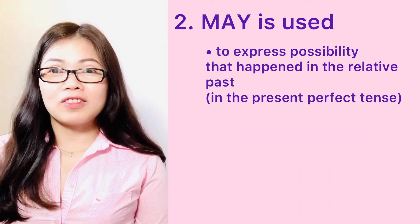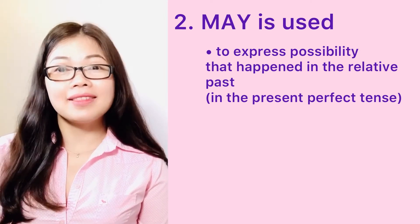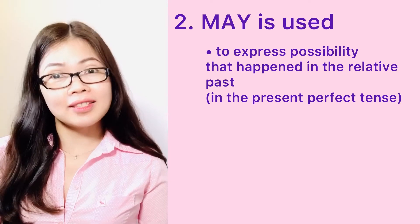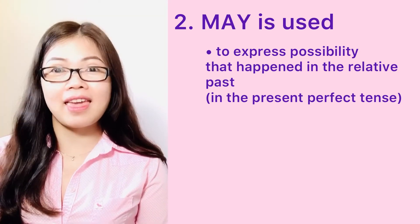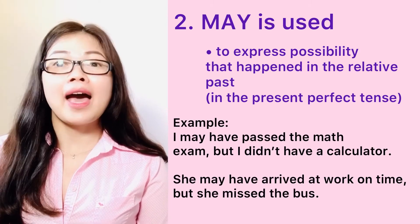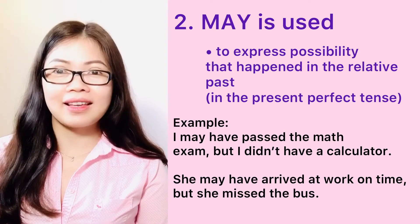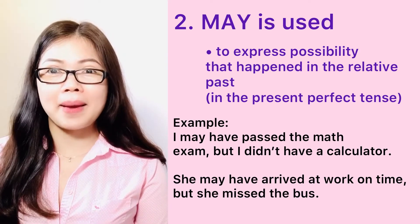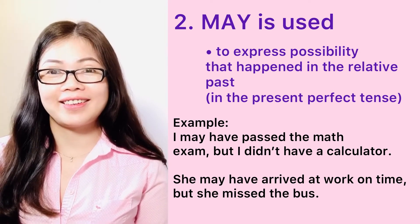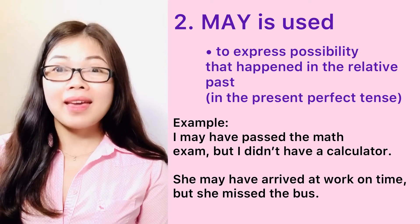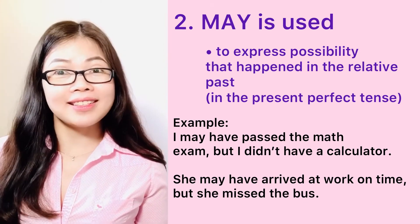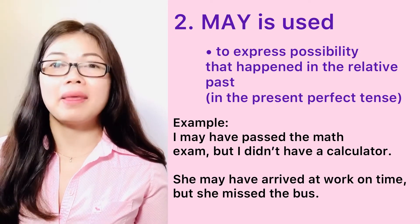May is also used in the present perfect tense to express a possibility that happened in the past. For example, I may have passed the math exam, but I didn't have a calculator. She may have arrived at work on time, but she missed the bus.